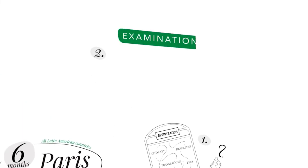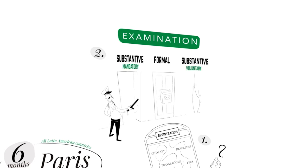2. Follow up the granting procedure. Depending on the country, the National Intellectual Property Office performs a mandatory substantive examination, as in Mexico, a mere formal one, like in Uruguay, or a voluntary substantive examination if the applicant requests it, like in Brazil.